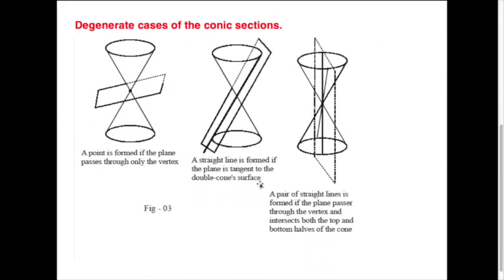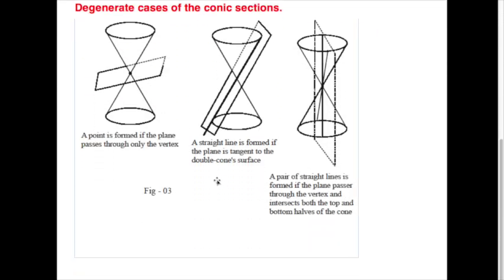There are cases that are degenerate cases, meaning they don't form one of those four. We don't study these because they're totally trivial and uninteresting. If you have a plane that hits that vertex where the two vertices of the cone meet, you just get a point in the plane. If you get a plane that's tangent to the double cone surface, you just get a straight line. If you just cut the cone completely in half, you actually just get two intersecting lines.